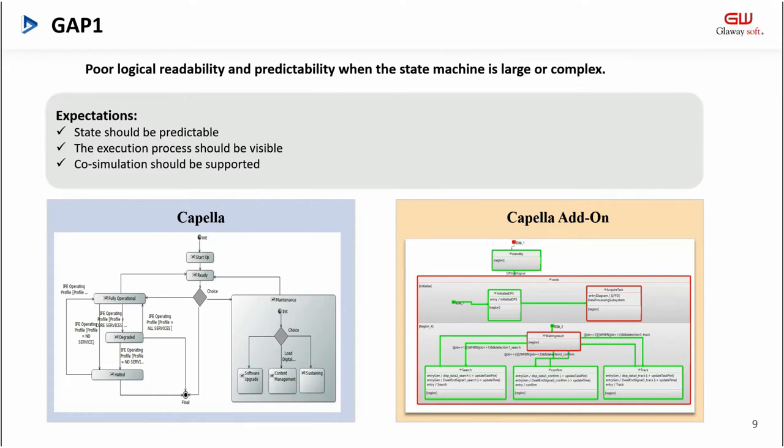Compared with textual description, the graphical language is more standardized and easier to read. But when the model is large or complex, it is still difficult for engineers to understand where the next state will be. Therefore, we need dynamic simulation and real-time animation display capabilities in order for users to directly read the whole process of state transition from the diagram. Referring to the state machine specification in SysML, we assign dynamic execution rules and animation display rules to the elements in the Capella state machine so that they can be simulated, operated, and read.